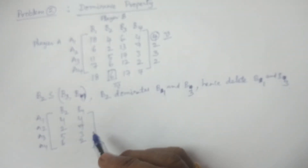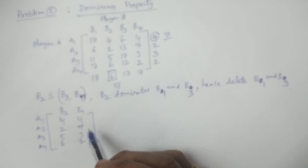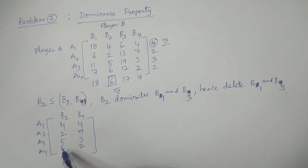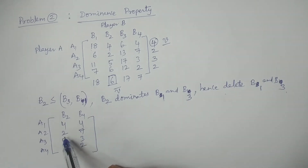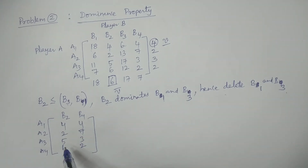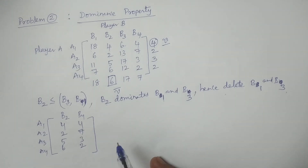Now if we compare the strategies of Player B: 4 equals 4, 2 is less than 7, 5 is greater than 3 — so Player B's strategies cannot be compared directly. And if we consider strategies of Player A: A2 vs A3 gives 2 less than 5 but 7 greater than 3; similarly other rows are not comparable. So we are not able to directly apply dominance.